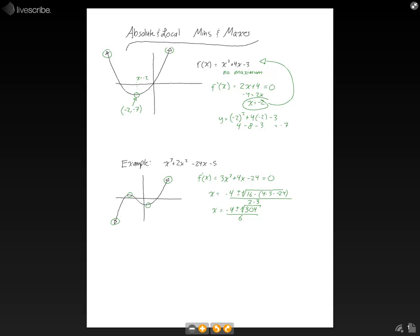But if we didn't have a graph, we wouldn't know that. So what we're going to do is we're going to take these two values of x and plug it back into the original equation, and whichever one gives us the larger number will be the maximum. Whichever one gives us the smaller number will be the minimum.